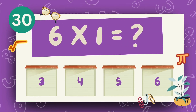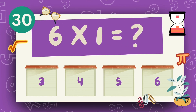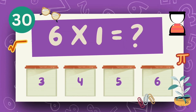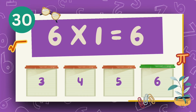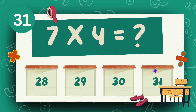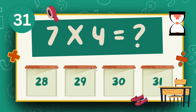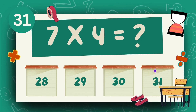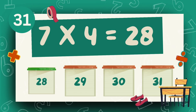What is 6 multiply 1? The answer is 6. What is 7 multiply 4? The answer is 28.